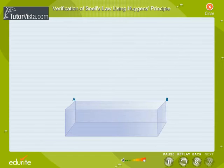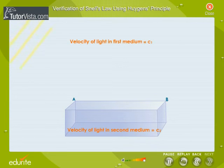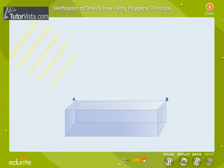AP is a surface separating two media 1 and 2 in which light travels with velocities C1 and C2 respectively. Let light travel from medium 1 to medium 2 so that AP is the incident wave front in medium 1, while BE is the refracted wave front in the other medium.